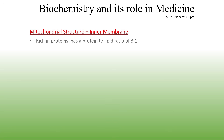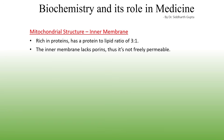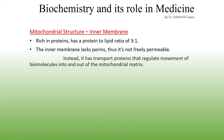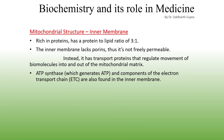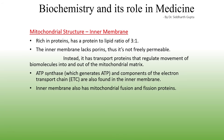In contrast to the lipid-rich outer membrane, the inner mitochondrial membrane is rich in proteins, with a protein-to-lipid ratio of 3:1. The inner membrane lacks porins and is therefore not freely permeable. Instead, it has selective transport proteins that regulate the movement of molecules into and out of the mitochondrial matrix. Other important structures in the inner membrane include ATP synthase, the components of the electron transport chain, and mitochondrial fission and fusion proteins.